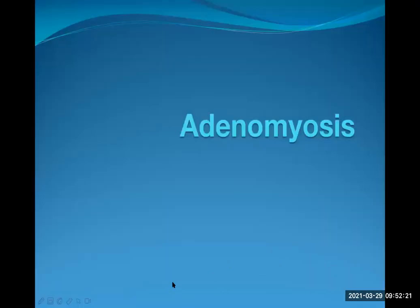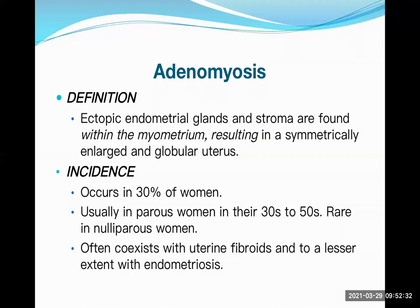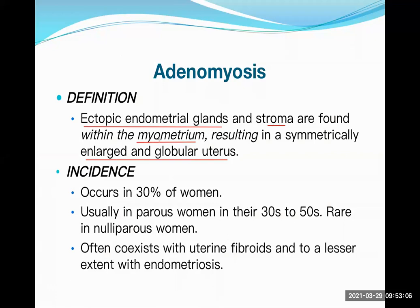Now let's enter a related topic — adenomyosis. 'Adeno' means gland; 'myosis' refers to the smooth muscle in the wall of the uterus. Adenomyosis is ectopic endometrial glands and stroma found within the myometrium of the uterus, resulting in a symmetrically enlarged and globular uterus. The uterus becomes enlarged because the endometrial glands and stroma (connective tissue) are present inside the myometrium.